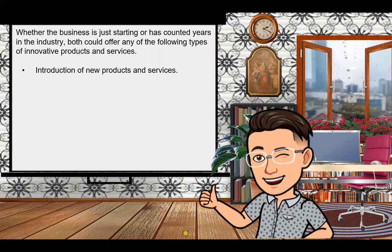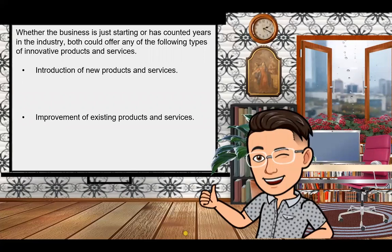Introducing new products involves a lot of risk because the market may be wary of unfamiliar products. It is very important to orient the market to the new product or service. Next is improvement of existing products and services — introducing a better version of an existing product or service. Customers are already familiar with its basic use, so its main advantage lies in novel features. For example, the popular pearl shake is actually an improvement of existing shakes, with the novel feature of sago or tapioca and different flavors not traditionally used.